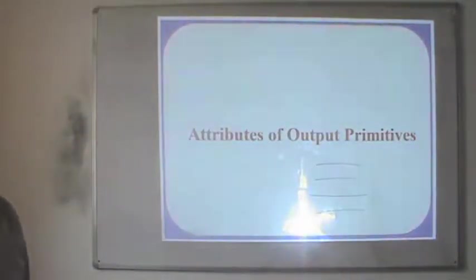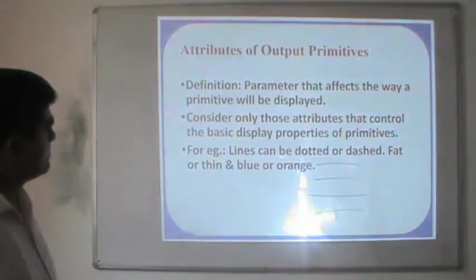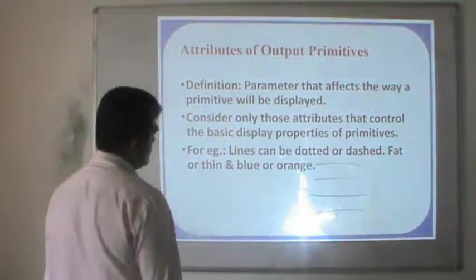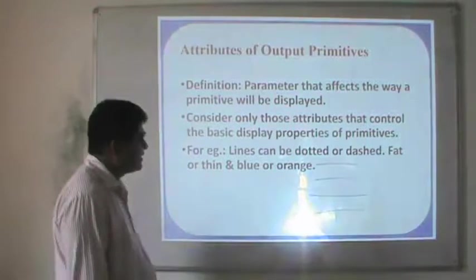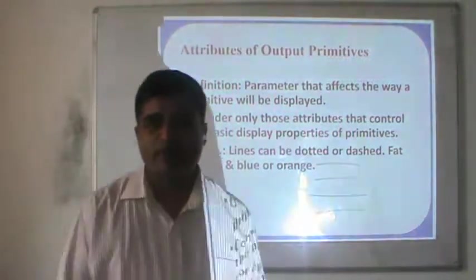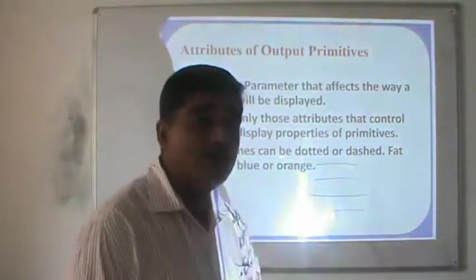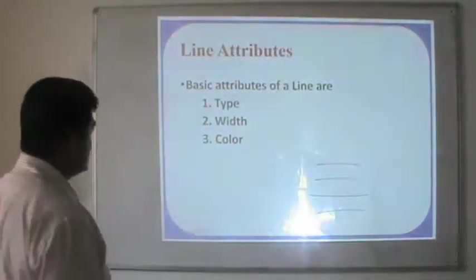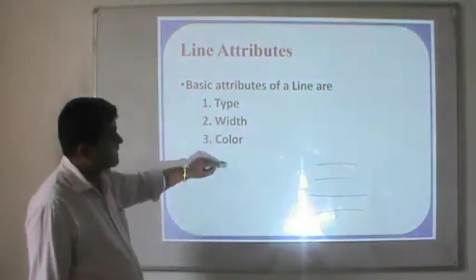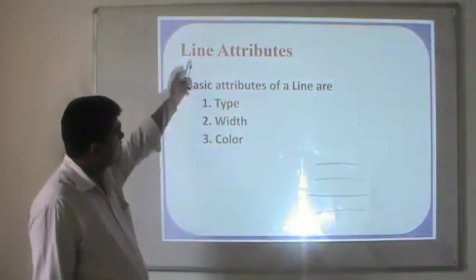Now let us look at the attributes of output primitives. A parameter that affects the way a primitive will be displayed. Consider only those attributes that control the basic display properties of the primitives. For example, lines can be dotted or dashed, fat or thin, or blue or orange. In the case of line attributes, we can have line type, width, and color. These are the basic properties of line attributes.